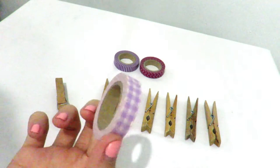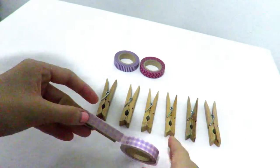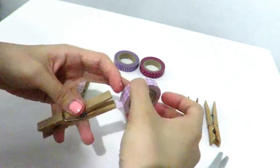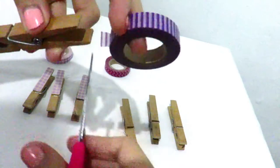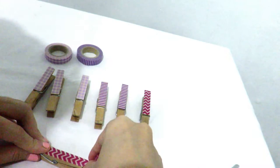First I began by designing the top part of my clothespins with washi tape. I personally wanted to use seven clothespins to signify the seven days of the week. You can get creative and put as many or as few clothespins as you want for your organizer.